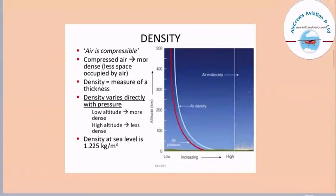The next factor is density. Air is compressible — compressed air is more dense, meaning it occupies less space. Density is a measure of the thickness of air and varies directly with pressure: at low altitude, air is more dense, and at high altitude it is less dense. The density at sea level is 1.225 kilograms per meter cubed. The graph showing altitude versus density illustrates how density decreases as altitude increases. This is how pressure, temperature, and density vary with altitude.